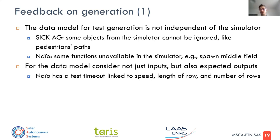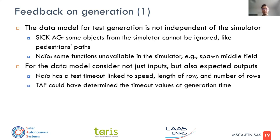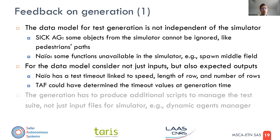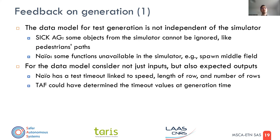For example, NIO has a timeout that links the robot speed, the length of the row, and the number of rows. TAF could have determined the timeout values at generation time. This is important because sometimes the expected behavior is the same for all test cases or groups of test cases, while in other cases you need a specific expected behavior for every test case — and you need to generate the world, the mission, the oracle properties, and the expected behavior for each test case.